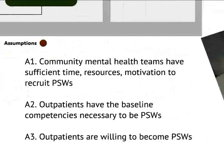These are the things that this project thought could go wrong in Uganda around this particular intervention component. Firstly, the community mental health teams don't have the time, resources, and motivation to recruit peer support workers. The second assumption is that people with lived experience of mental health problems or outpatients actually have the competencies necessary to be peer support workers — they have the skills. And thirdly, that they're willing to become peer support workers.